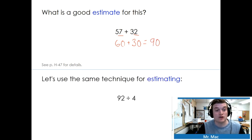Let's use the same technique for estimating. 92 divided by 4. Well, if I rounded 92, I would round down to 90. But if I rounded the 4 down, I would get a 0. Uh-oh.